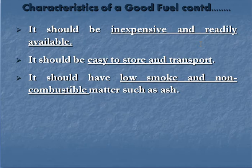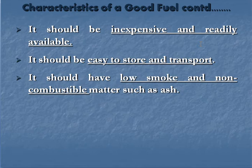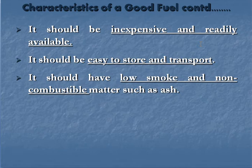The fourth characteristic is that fuel should be easy to store and transport, providing an additional economic benefit. The fifth characteristic is that it should produce low smoke and low non-combustible matter — that is, low ash. Coal scores poorly on this fifth point, producing a lot of smoke and ash after burning, and ash disposal becomes a significant problem. To summarize: a good fuel should have a moderate ignition temperature, high calorific value, be inexpensive and readily available, easy to store and transport, and produce low smoke and ash.